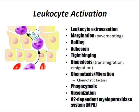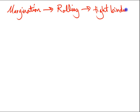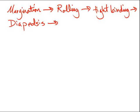Leukocyte extravasation is the process by which leukocytes exit the vascular space and enter peripheral tissues to participate in the immune response. The steps are: margination, rolling, tight binding, diapedesis, and chemotactic migration. Margination, also known as pavementing, is where leukocytes localize to the outer margins of the bloodstream endothelium, placing them adjacent to the vascular endothelium. This is the first step in leukocyte extravasation.